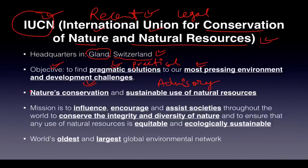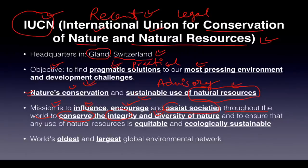IUCN helps in nature's conservation as well as the sustainable use of natural resources — these are its two key aims. The mission of IUCN is to influence decision-making parties and to encourage and assist societies throughout the world to conserve the integrity as well as the diversity of nature. The role is quite broad, giving them a lot of discretion on how they advise regarding nature's conservation.